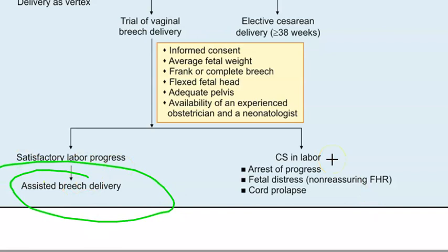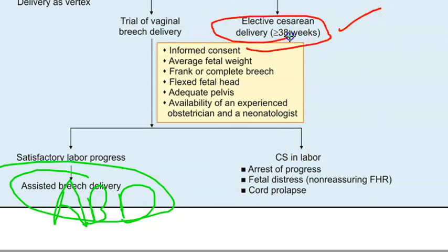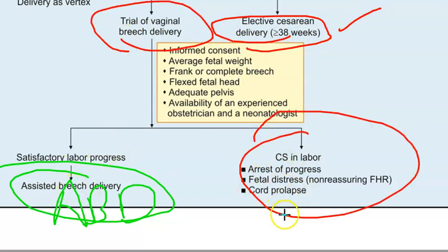For a trial of vaginal breech delivery, if labor is progressing well you proceed with assisted breech delivery — having an anesthesiologist, neonatal resuscitators, pediatricians, and an assistant to press on the fundus during contraction. If progress is not satisfactory, you proceed to cesarean section.